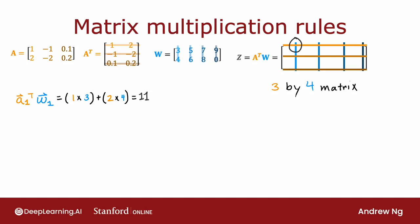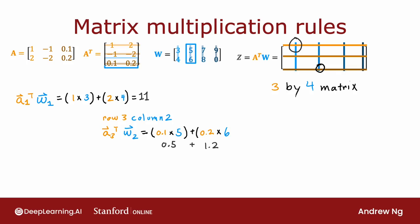Let's look at a second example: how would you compute the element in row 3, column 2 of Z? To compute that, you grab row 3 of A transpose and column 2 of W and dot product those together. This corresponds to the darkest shade of orange and the second lightest shade of blue. The calculation is 0.1 × 5 + 0.2 × 6, which is 0.5 + 1.2, equal to 1.7.